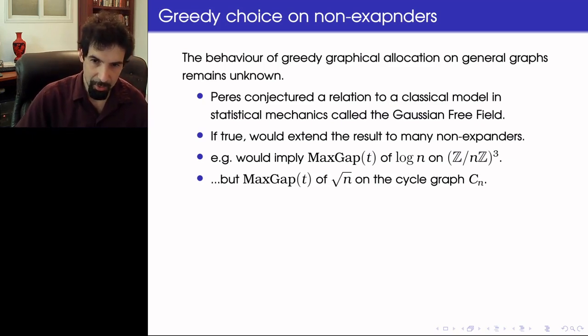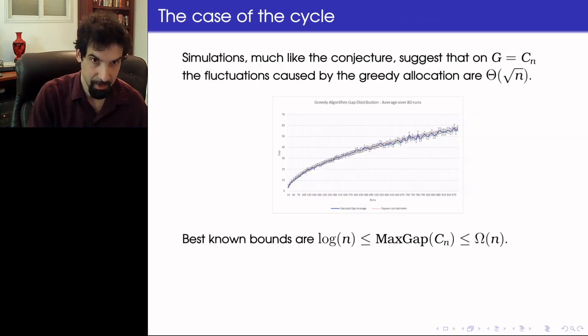However, for cycle graph, for example, or other poorly connected graphs, it would mean that this greedy balanced allocation will yield polynomial maximum gap, which we would consider relatively bad. And indeed simulations follow the conjecture and suggest that on this graph the fluctuation caused by the greedy allocation are indeed of order square root N. So you can see a simulation we conducted on different cycle sizes. We run the algorithm 80 times every time until the load stabilizes and becomes stationary, and you can see how closely it follows the square root N curve.